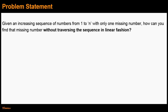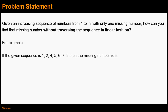The problem statement is: given an increasing sequence of numbers from 1 to n with only one missing number, how can you find that missing number without traversing the sequence in linear fashion? For example, if the given sequence is 1, 2, 4, 5, 6, 7, 8, then as you can observe the missing number in this sequence is 3.